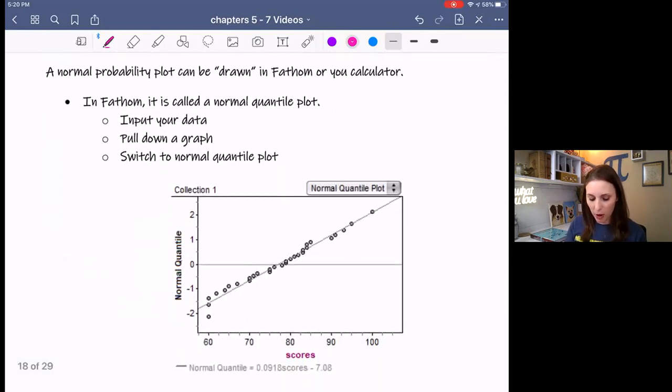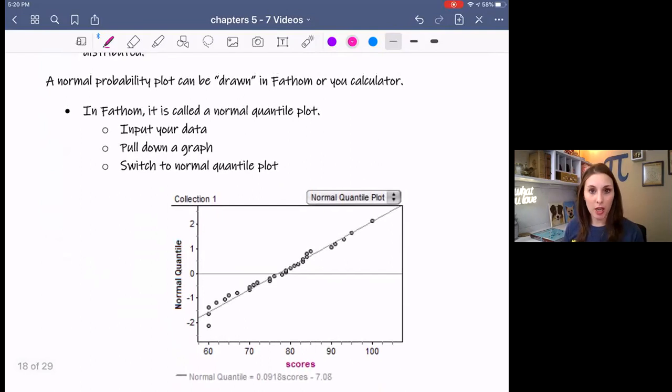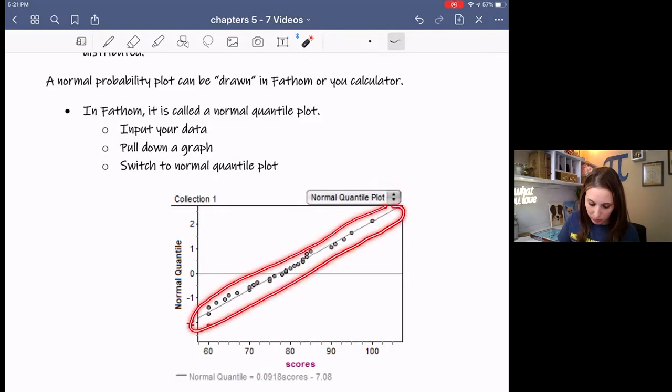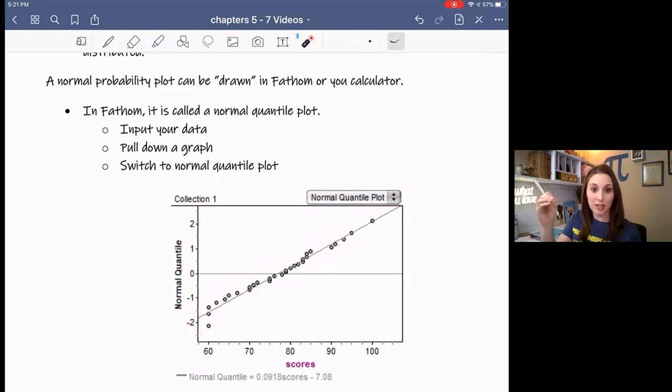So if you have Fathom, then you're going to drag down a table to input your data and then you're also going to drag down a graph and you will drag your variable over to the graph. And then you will select right here from the drop down menu normal quantile plot. So sometimes books or programs or whatever call it normal quantile. That's the same thing as normal probability. And then it will graph it and you can kind of see here it's got like a linear, it's got like a line along the data. So you can see it is pretty linear.